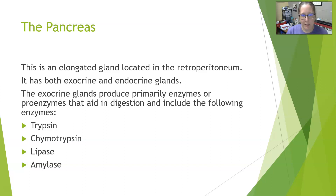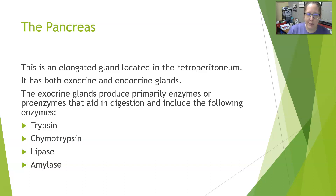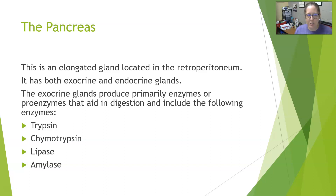It has both endocrine and exocrine functions as a gland. The exocrine function — 'exo' meaning to secrete out — means it secretes enzymes into the GI tract. These include enzymes and proenzymes, which are the inactive form of the enzyme that gets activated in the GI tract, and they aid digestion.